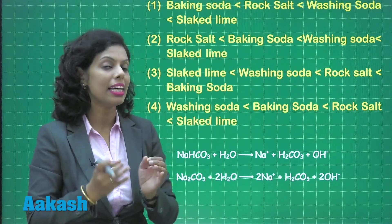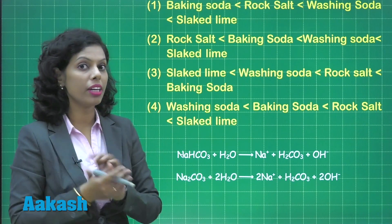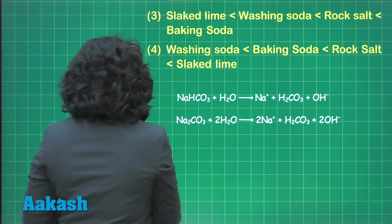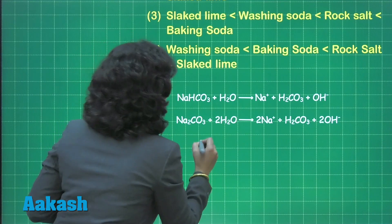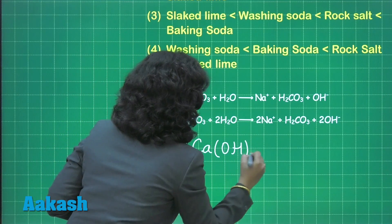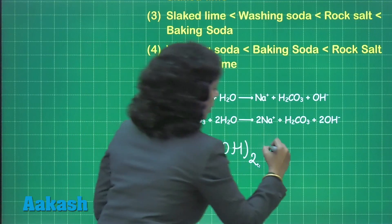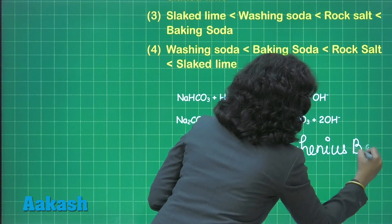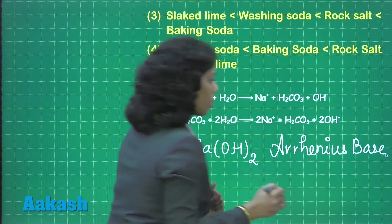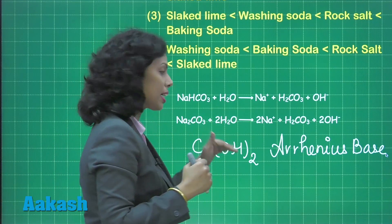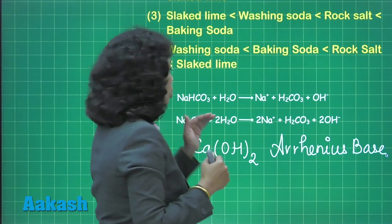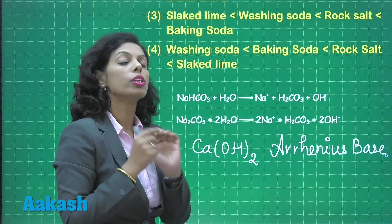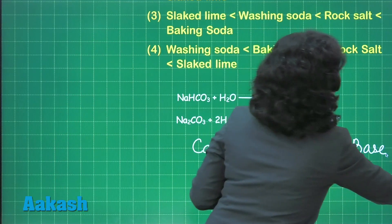NaHCO₃ has a lower pH compared to washing soda. Calcium hydroxide, which is slaked lime, is an Arrhenius base and has the maximum pH value. So the order from highest to lowest pH is: Ca(OH)₂, Na₂CO₃, NaHCO₃, and NaCl.